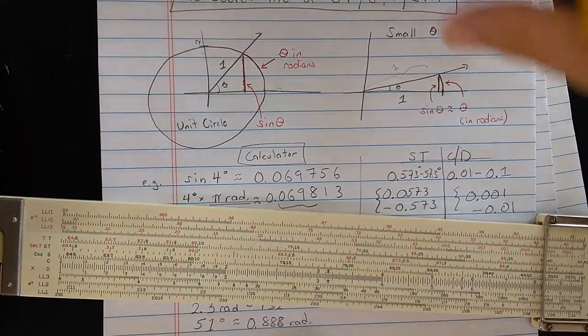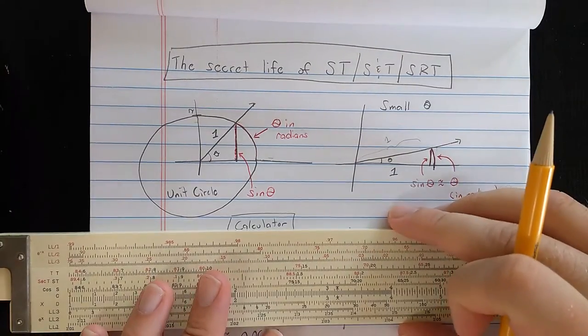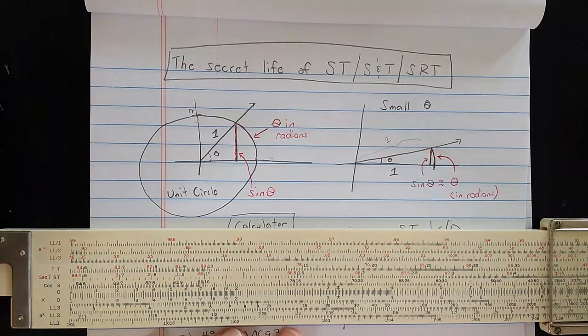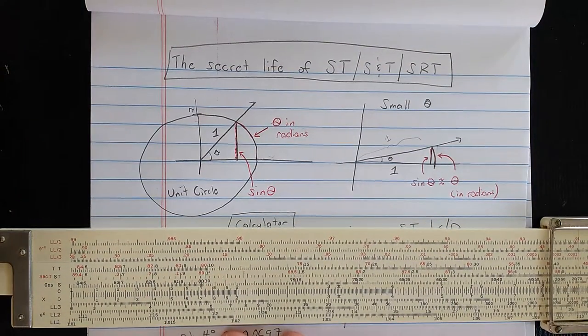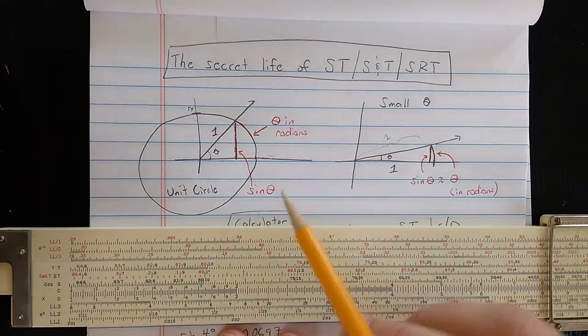I've already done some basic examples using the ST scale in other videos, so I'm not going to repeat that. Instead, I'm going to explain what's going on here in an elementary way. There are calculus-based explanations also, but here is an idea.